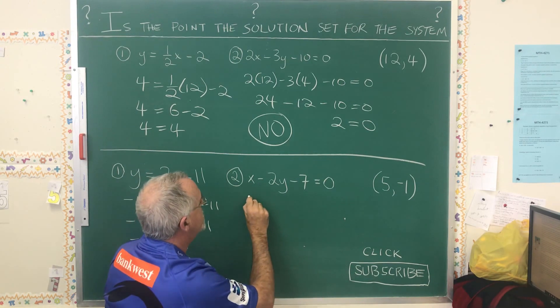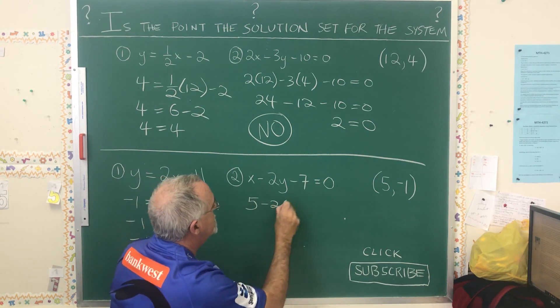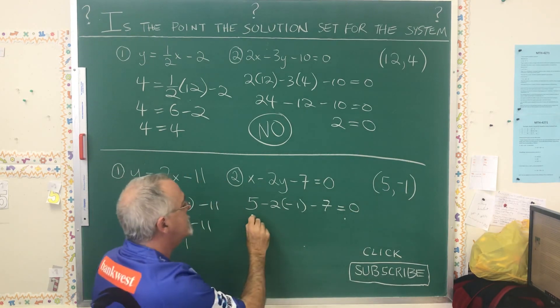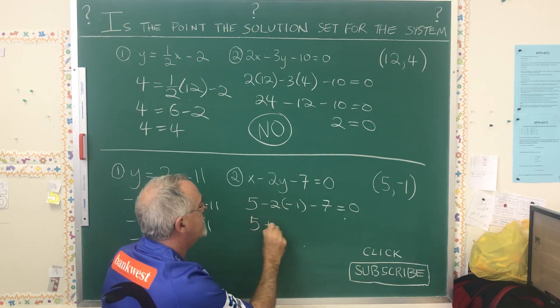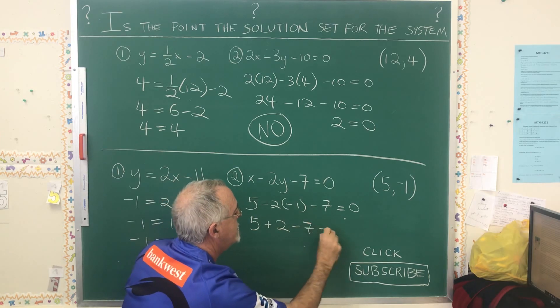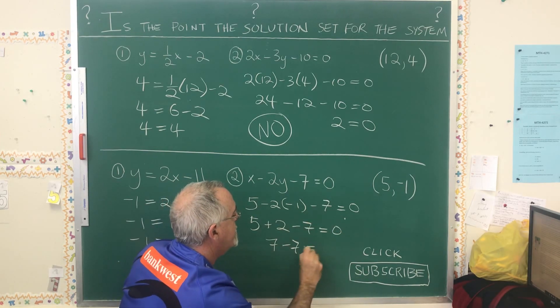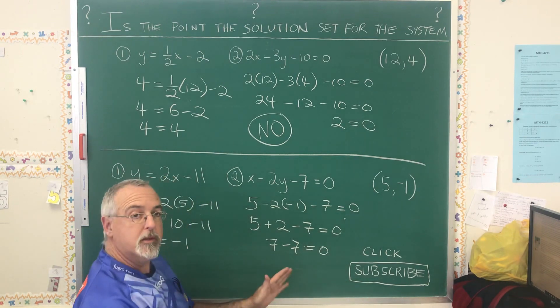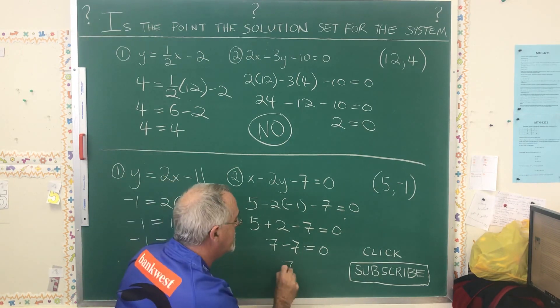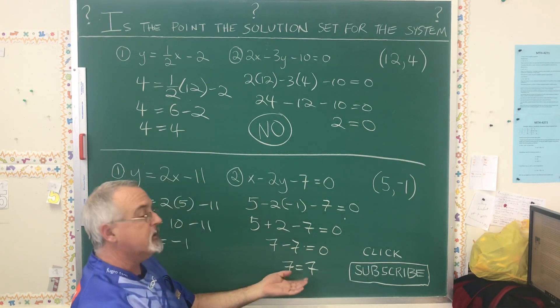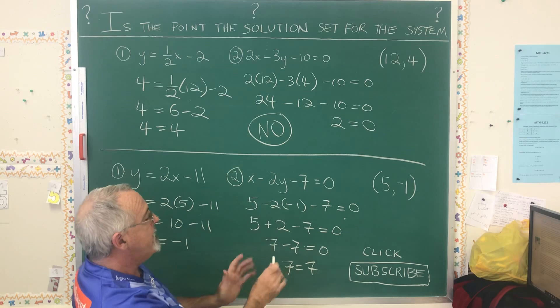Let's try 5 negative 1 with this equation. Careful with your signs. This gives me 5 plus 2. 7 minus 7 is equal to 0. I know this is working. I can still continue. Move this negative 7 to the other side where it becomes positive and get this far. But it verifies.